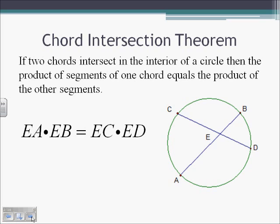Here we have two chords, AB and CD, intersecting at E. So we know EA, one part of the first chord, times EB, the other part of that chord, is going to equal the product of the two parts of the other chord. So that's going to be EC times ED.